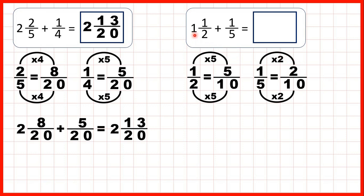So instead of 1 and a half we can write 1 and 5 tenths because that's equivalent, and instead of adding 1 fifth we can add 2 tenths. So we have 1 whole, the denominator stays the same, and 5 plus 2 is 7, so that's 1 and 7 tenths as our answer.